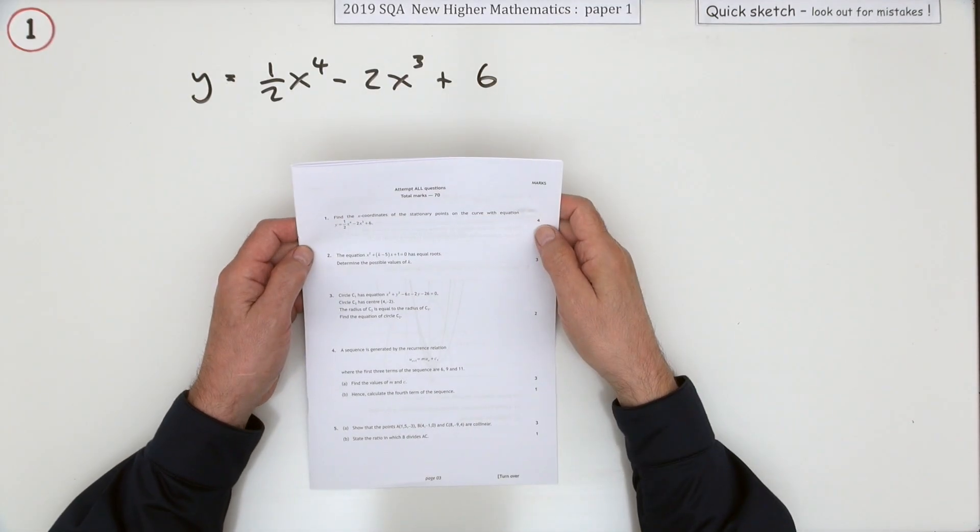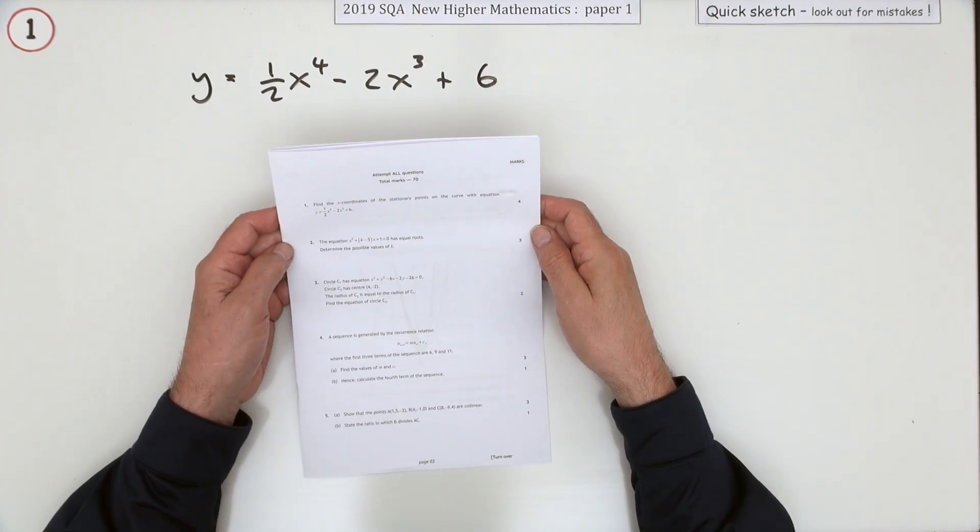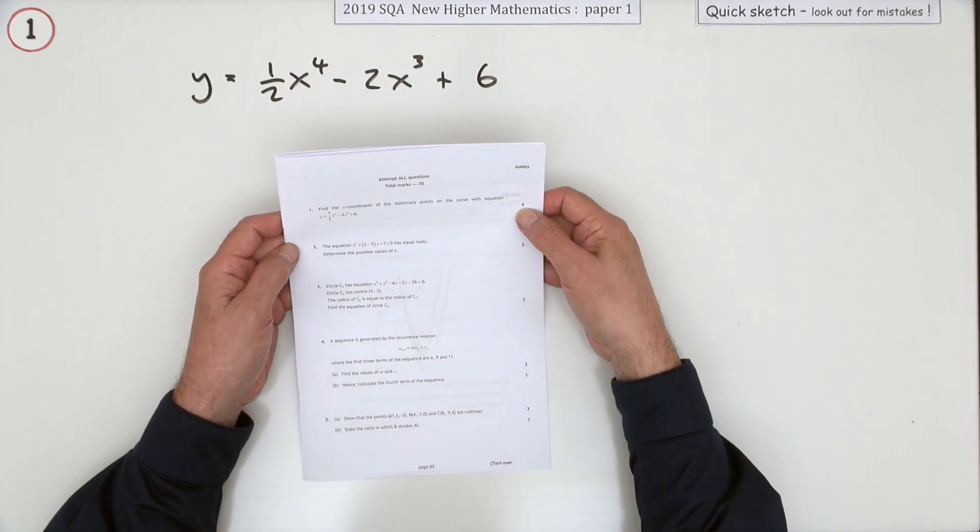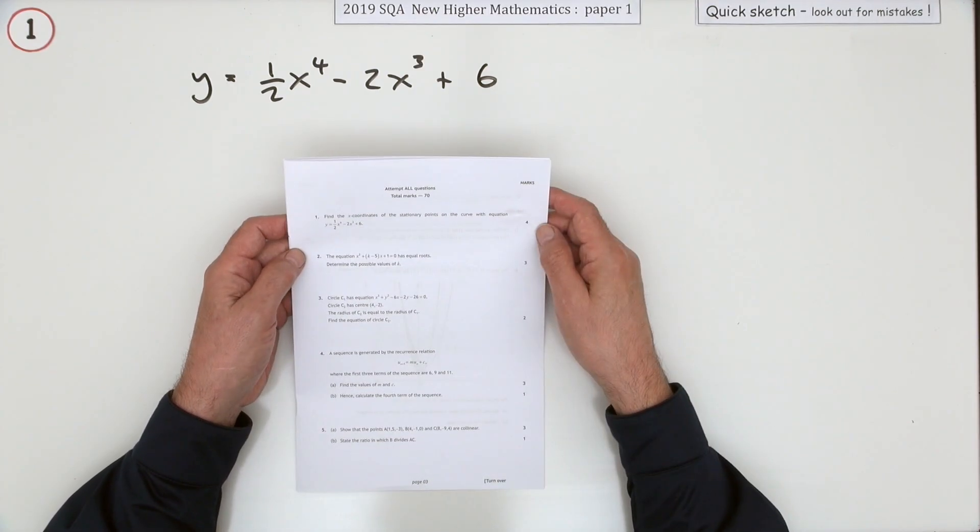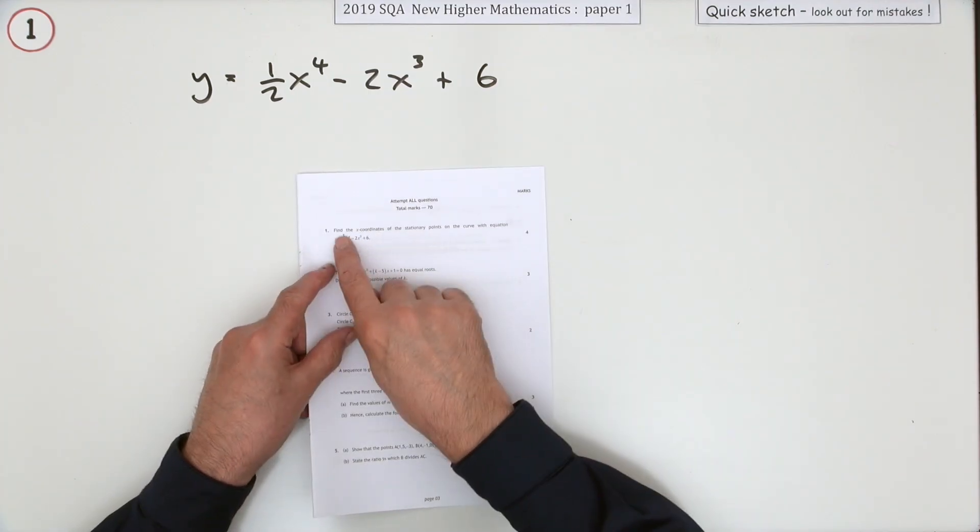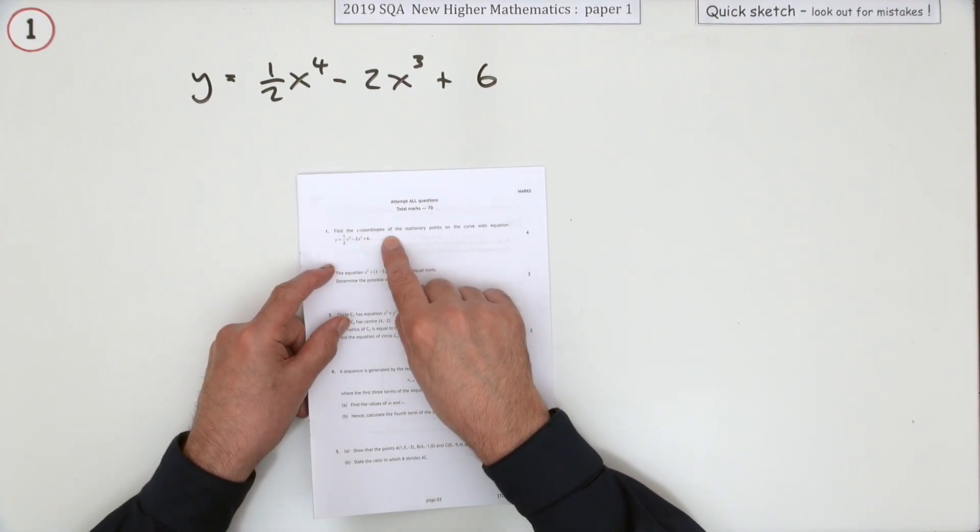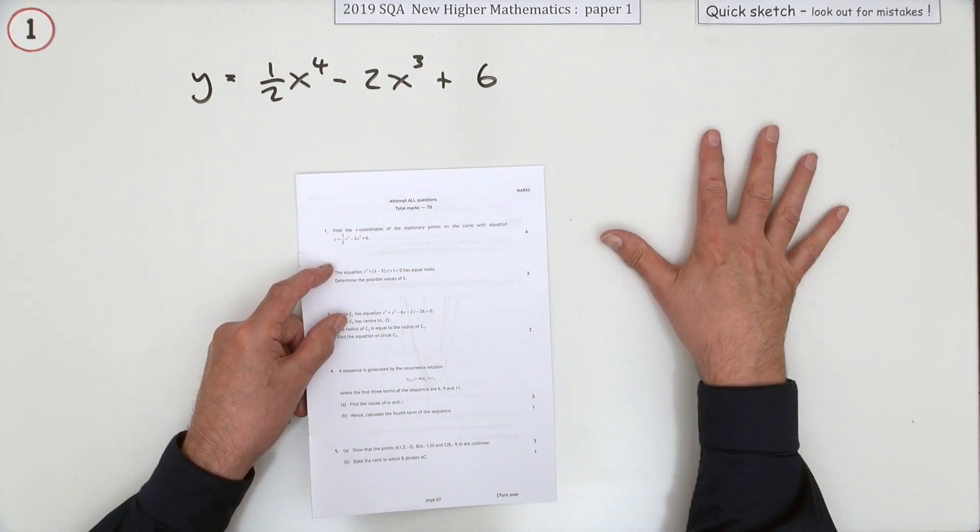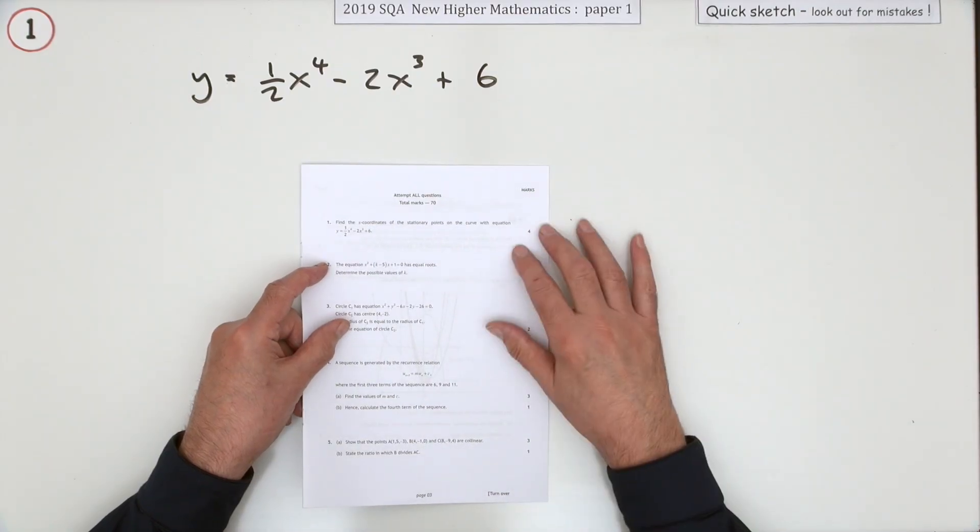So number one from the first paper of the 2019 Higher Maths. Find the coordinates of a stationary point, but watch - it's just find the x-coordinates and that's all. No nature table, no y-coordinates. Don't go too far and waste your time.